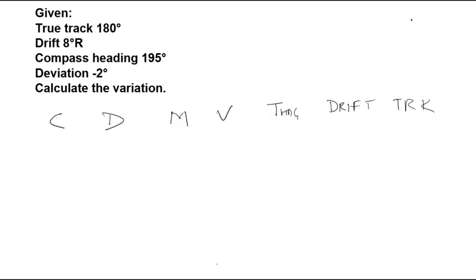So, in this CDMVT drift and track, we will put the values that we have. We have true track as 180 degrees. Drift is 8 degrees right. Compass heading is given as 195. Deviation is minus 2 degrees and we have to calculate the variation.